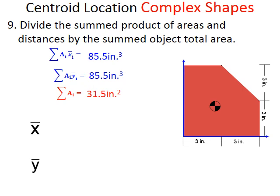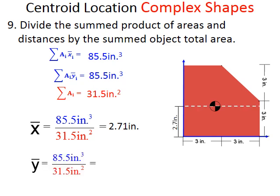Now we have everything we need to calculate x-bar and y-bar for our complex shape. X-bar is 85.5 cubic inches divided by 31.5 square inches. When we do the math, the number is 2.71, and our units work out so the square inches cancel two of the inches on top, leaving us with 2.71 inches. Same thing for y, we get 2.71 inches, and you can see that depicted graphically.